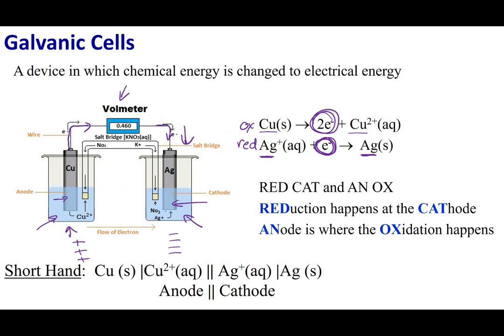What I have to do is connect these two beakers through another route. I'm going to go ahead and add a salt bridge. This salt bridge is going to allow ions to flow back and forth. Negative ions are going to flow into this side, and then positive ions are going to flow into the other side.